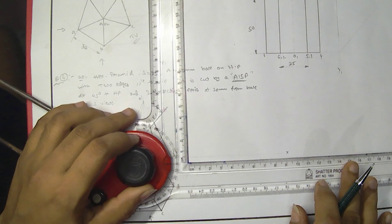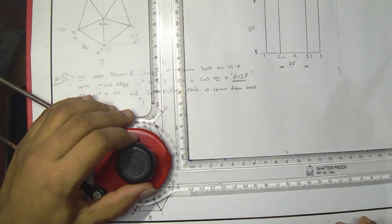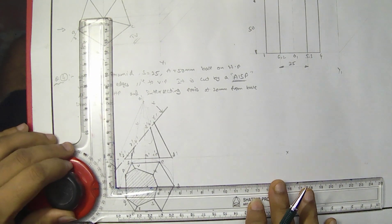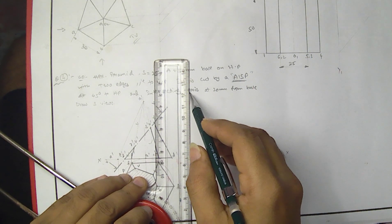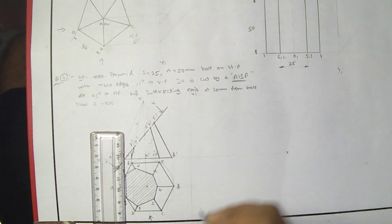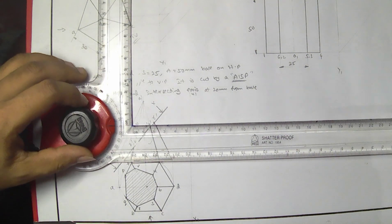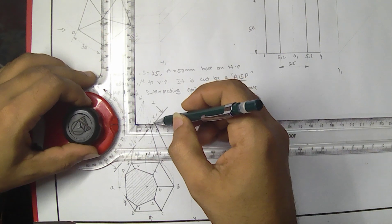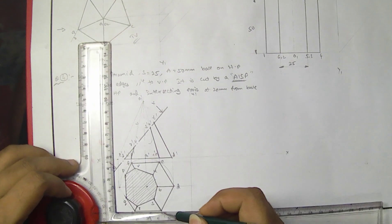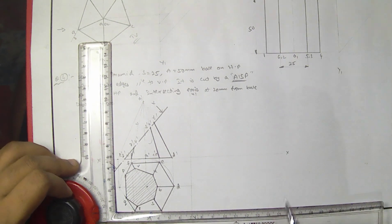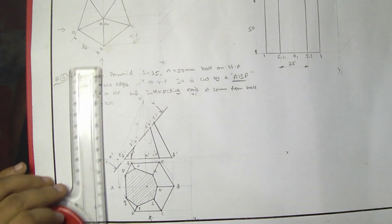This is the reference line for the side view. X and Y is the main reference line between HP and VP. Now I will be drawing the lines from each and every corner of the pyramid and the section, and we have to bring them to the side view.